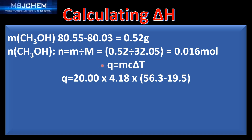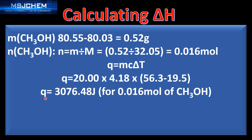Next we use Q equals MC delta T. M is the mass of the water, which is 20.00 grams. We multiply by the specific heat capacity of water, then by the change in temperature, which is 56.3 minus 19.5. When we do the calculation, Q equals 3076.48 joules, and that's for 0.016 moles of methanol.